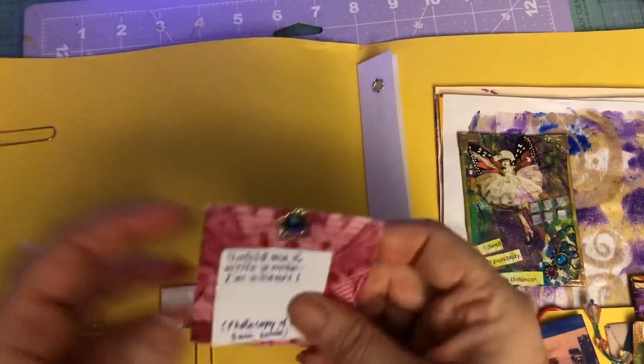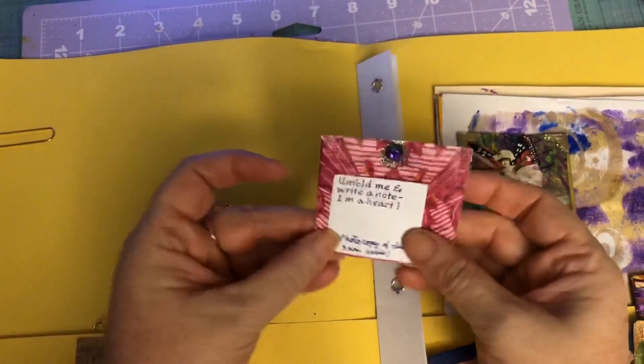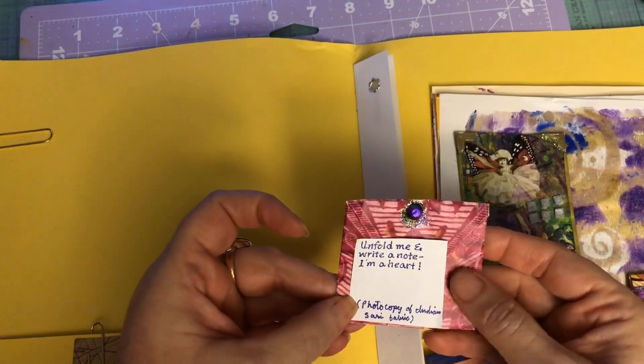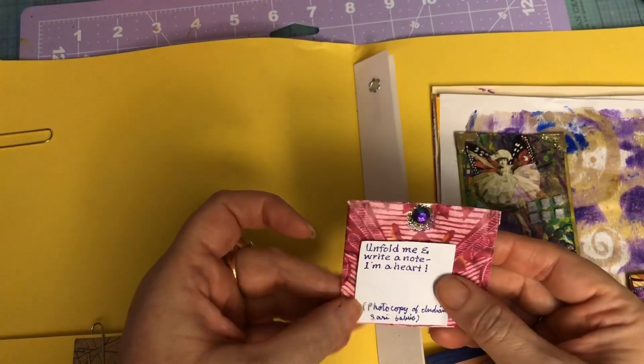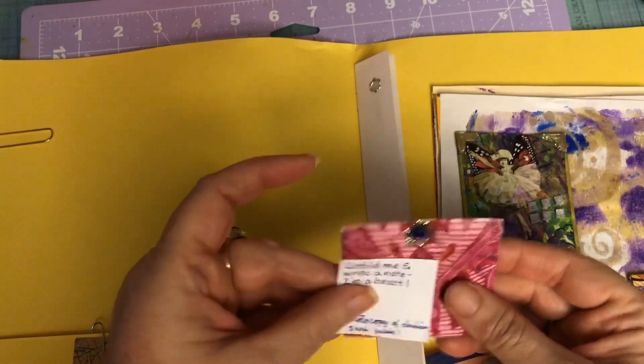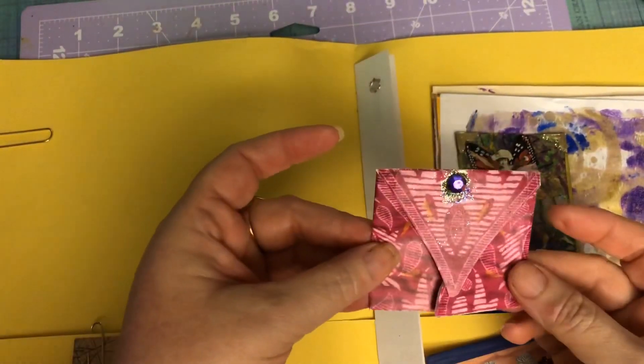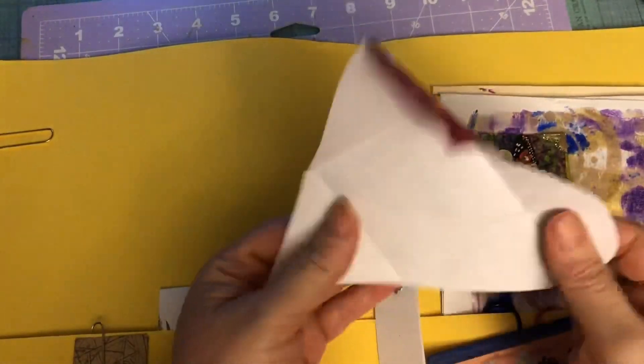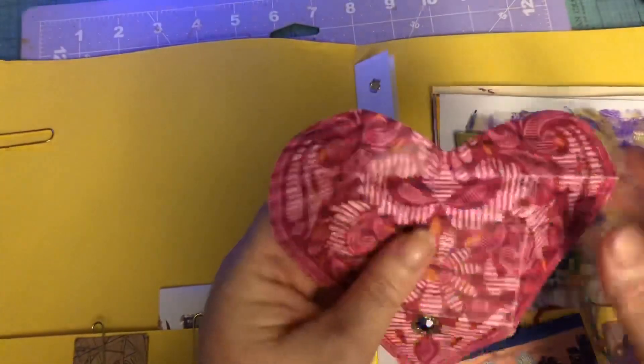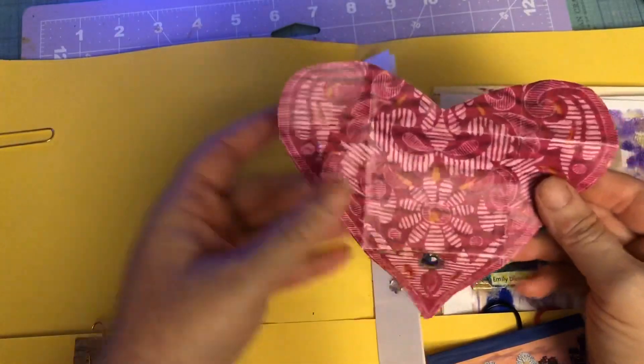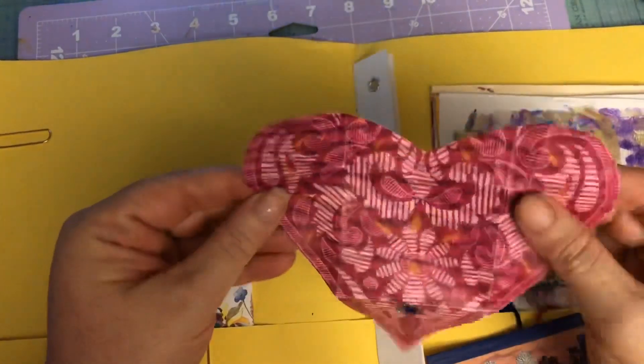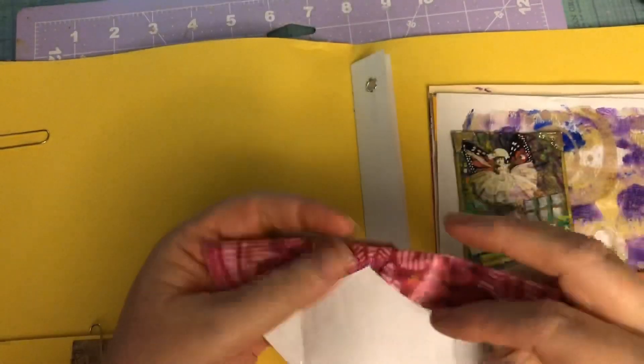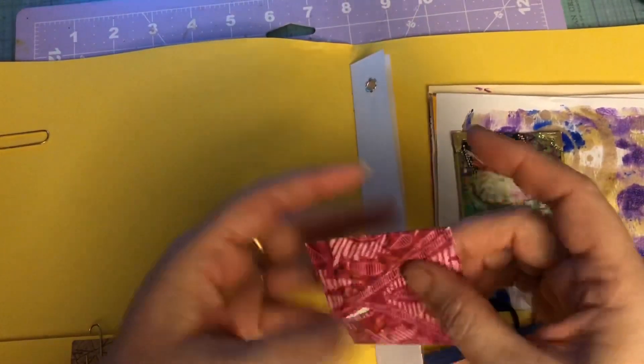This is one of my favorites, it is so pretty. It says unfold me and write a note, I'm a heart, and it's a photocopy of Indian fabric. Isn't it pretty? It looks really good on paper though.